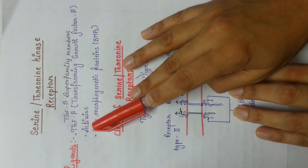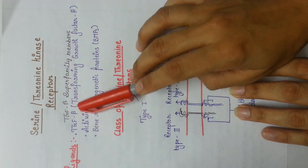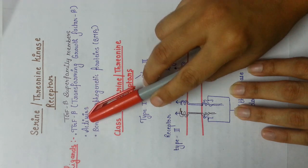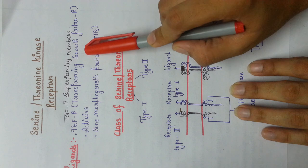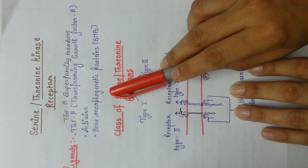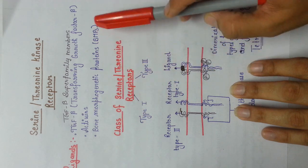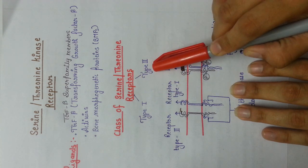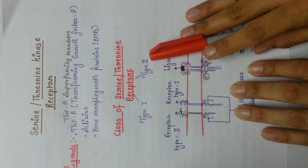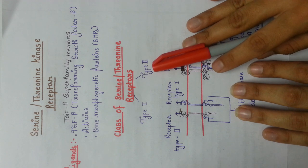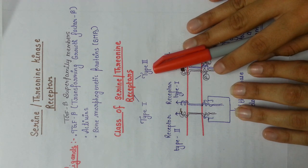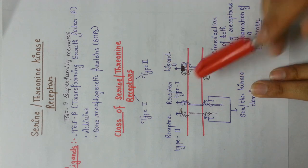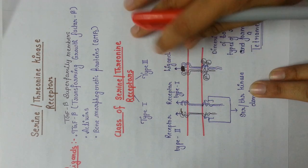First of all, we will see what ligands generally bind to these receptors. These are your TGF-β superfamily members, and these members consist of three classes: first is your TGF-β, that is transforming growth factor β; your activins; and BMPs, that is your bone morphogenetic proteins. We have two classes of serine-threonine receptors — type 1 and type 2 — and these two classes are present in the form of dimers. They are present in the plasma membrane and are single transmembrane, just like your receptor tyrosine kinases.